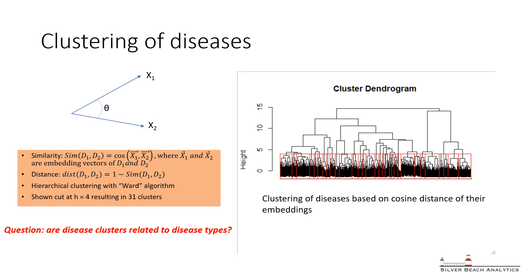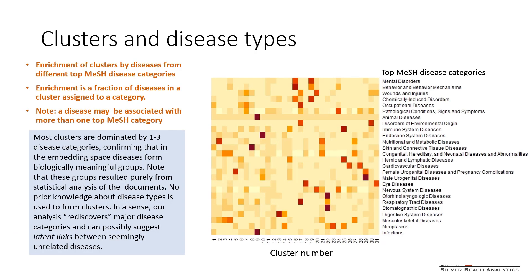The results of this clustering are shown here. We identified 31 disease clusters that are well aligned with top disease categories from MeSH. This indicates that disease categories naturally emerge from patterns in the embedding space.